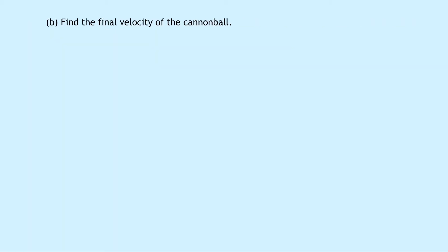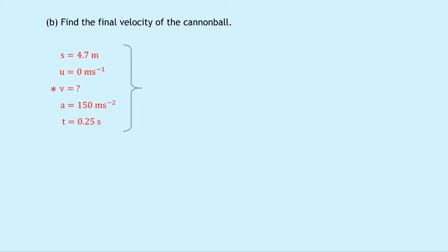Part B asks to find the final velocity of the cannonball, so we're looking for V. Writing down SUVAT: S equals 4.7 metres, U equals 0 metres per second, we're trying to find V, A is 150 metres per second squared, and T is 0.25 seconds. Because we've now found S in part A, we can use any equation. Let's use V equals U plus AT: that gives 0 plus 150 times 0.25, which gives an answer of 37.5 metres per second.